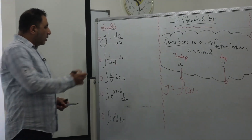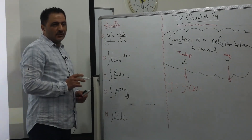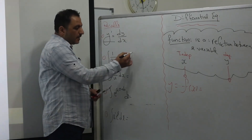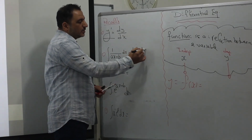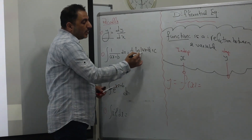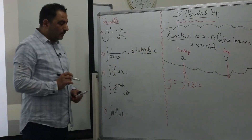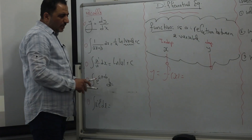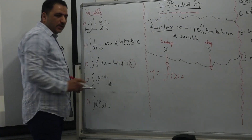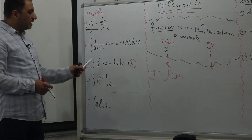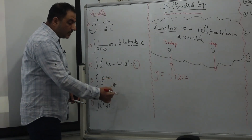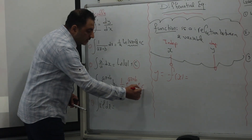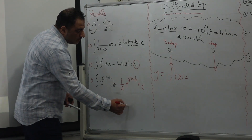Let us recall some antiderivatives. The integral of 1/(ax + b) dx is (1/a) · ln|ax + b|. Don't forget the absolute value symbol. In general, the integral of u'/u dx is ln|u| + c. The constant c is any constant because many functions could have the same derivative. The antiderivative of e^(ax+b) dx is (1/a)e^(ax+b) + c. Also, u' · e^u is the general formula — it gives e^u + c. If y = f(x), then y prime is dy/dx.